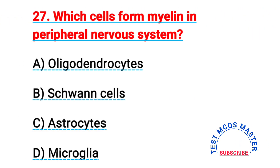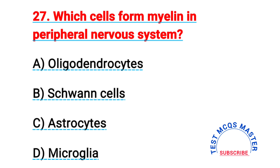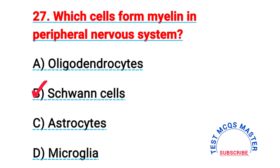Question number twenty-seven: which cells form myelin in the peripheral nervous system? The right answer is B, Schwann cells.